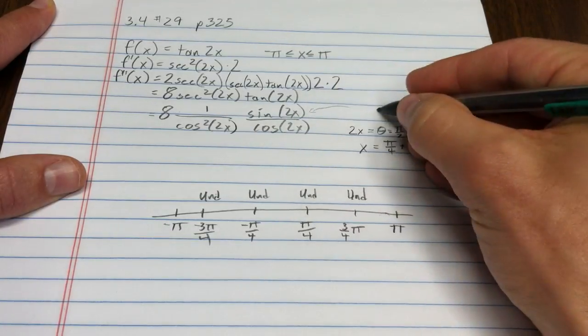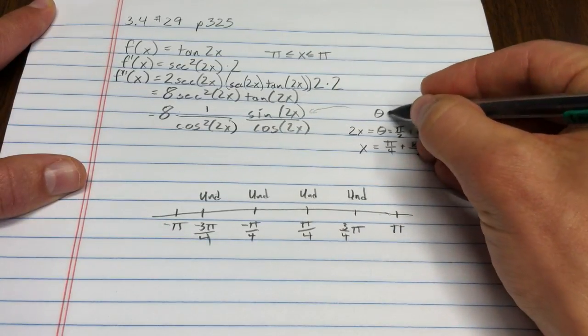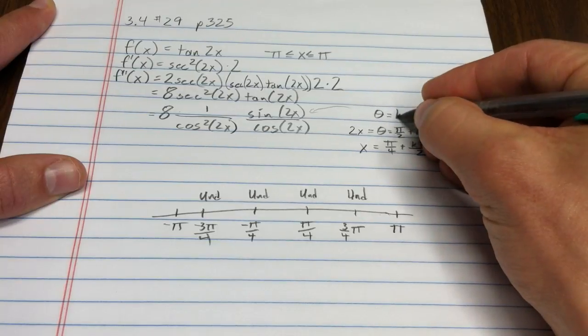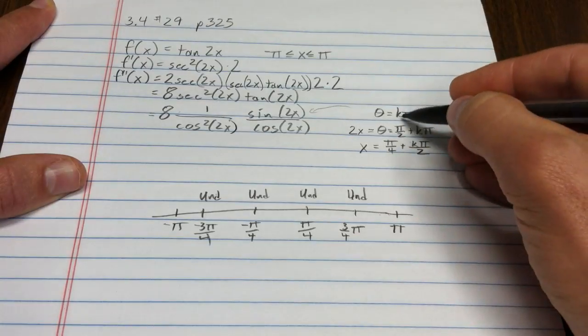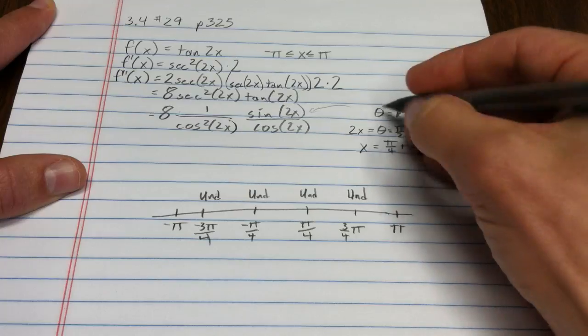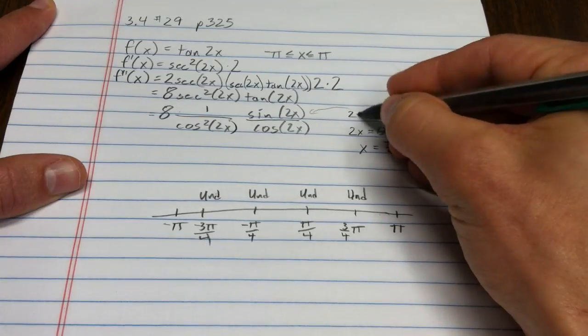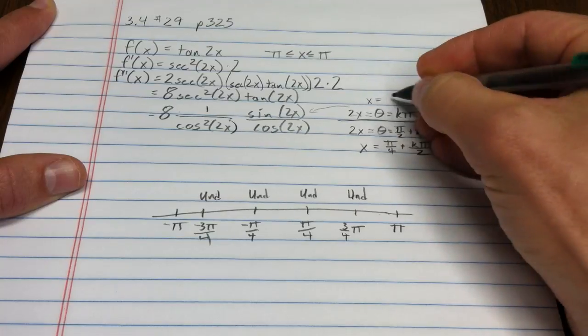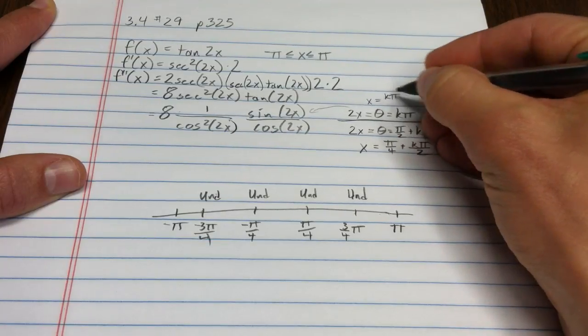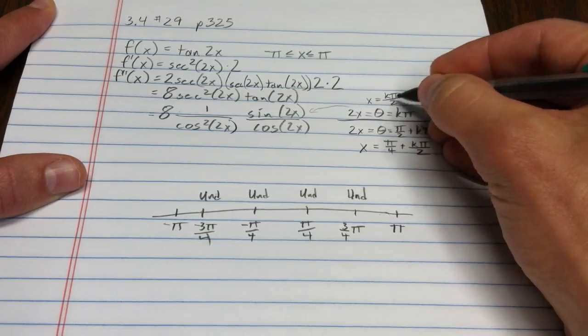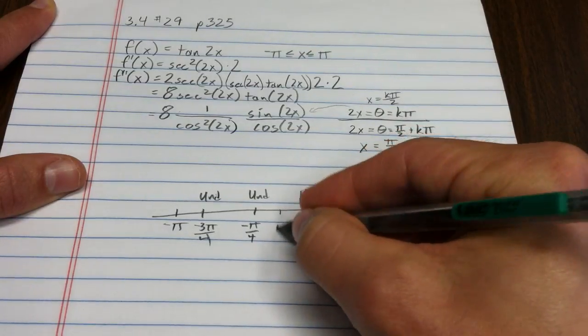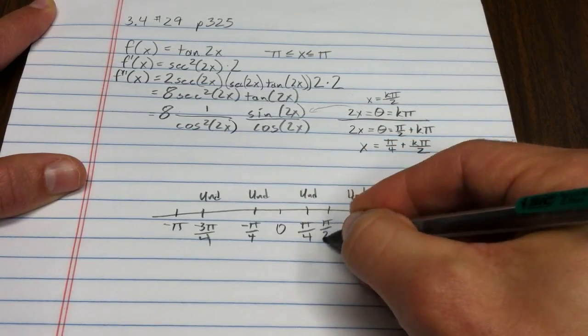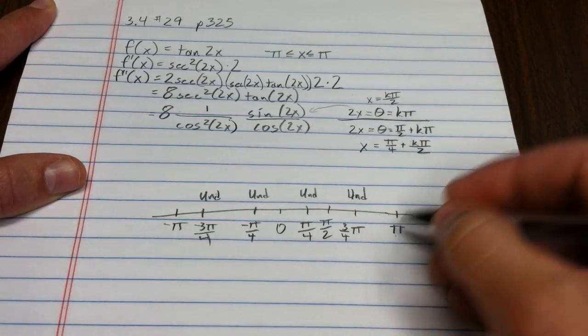Where is sine of 2x equal to 0? Well, sine is 0 where theta, the input angle, is equal to a multiple of pi. So, 0, pi, 2 pi. So, if I have 2x there, that's the same as x equal to k pi over 2. So, any half multiple of pi, such as 0, such as pi halves, such as pi.